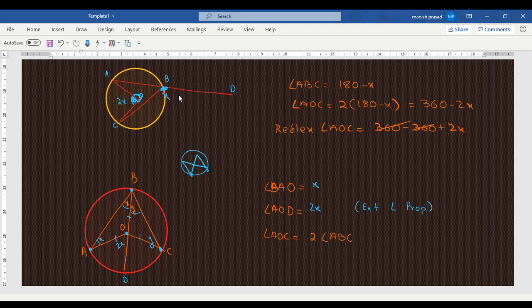So now again by exterior angle property, this will become 2y. Now if you look at AOC, that means is 2x plus 2y. You take out 2 common: 2 times (x plus y). If you look at x plus y, it is nothing but our angle ABC. So hence proved. Okay, yeah.